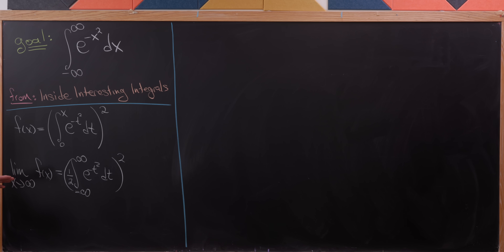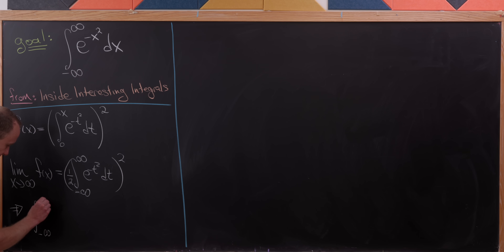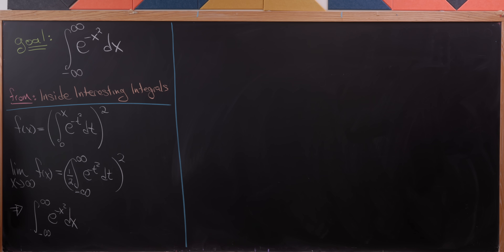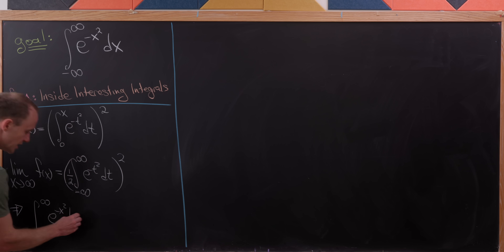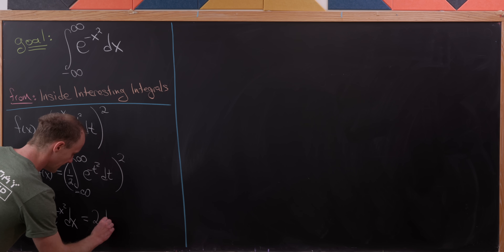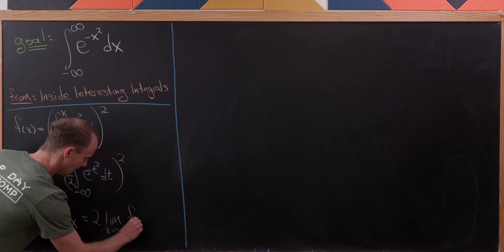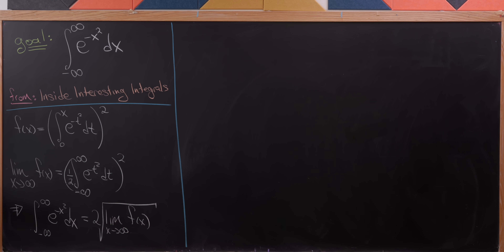From here we can solve for the integral. We'll have our integral from minus infinity to infinity of e to the minus x squared dx. Squaring a half turns into a 4, but then we also take a square root — so that means we really have 2 times the square root of the limit as x goes to infinity of f of x.